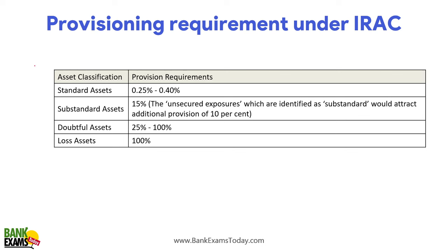Here is a key provisioning table: For standard assets, provisioning requirement is 0.25% to 0.4% (0.75% for real estate projects). For substandard secured assets, 15%; for unsecured substandard exposures, 25%. For doubtful assets, it ranges from 25% to 100% depending on duration. For loss assets, 100% provisioning is required.